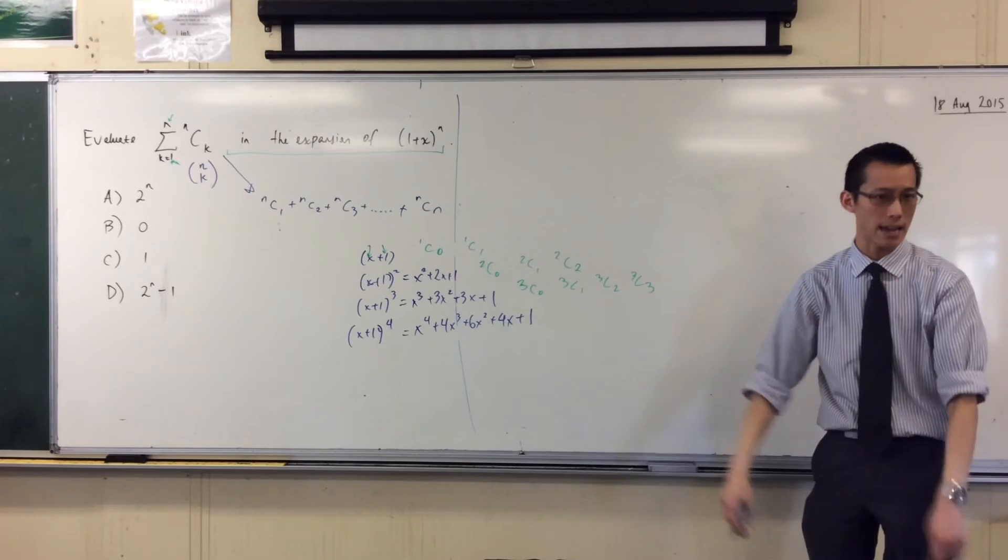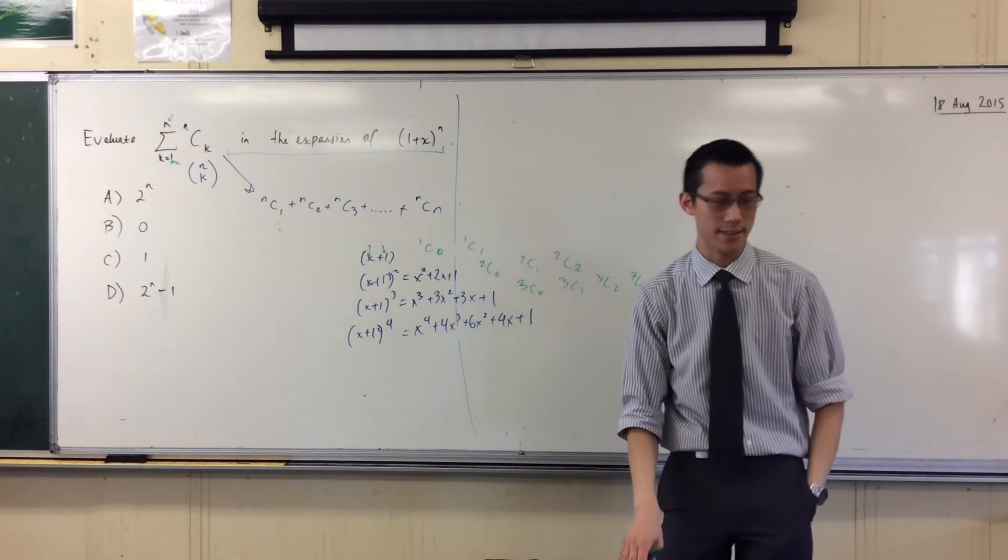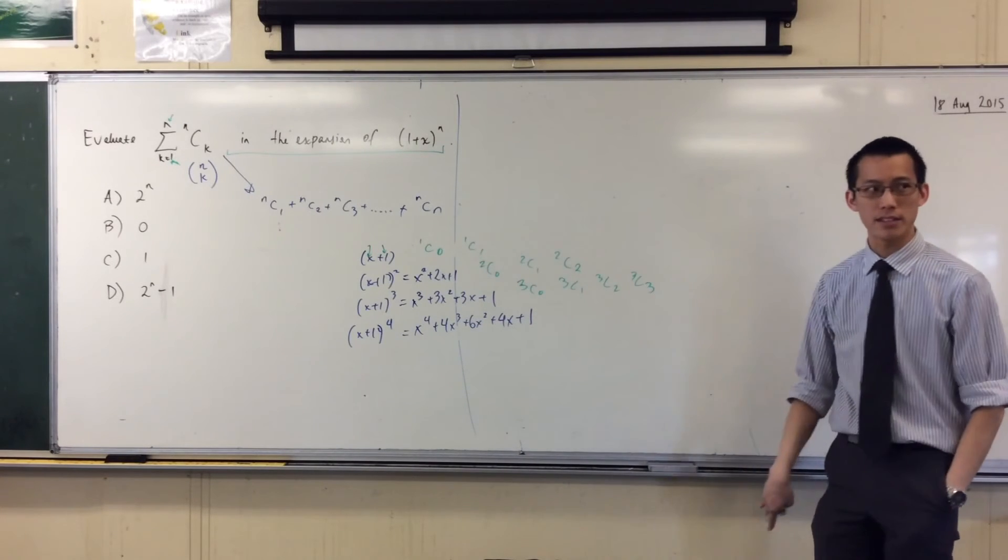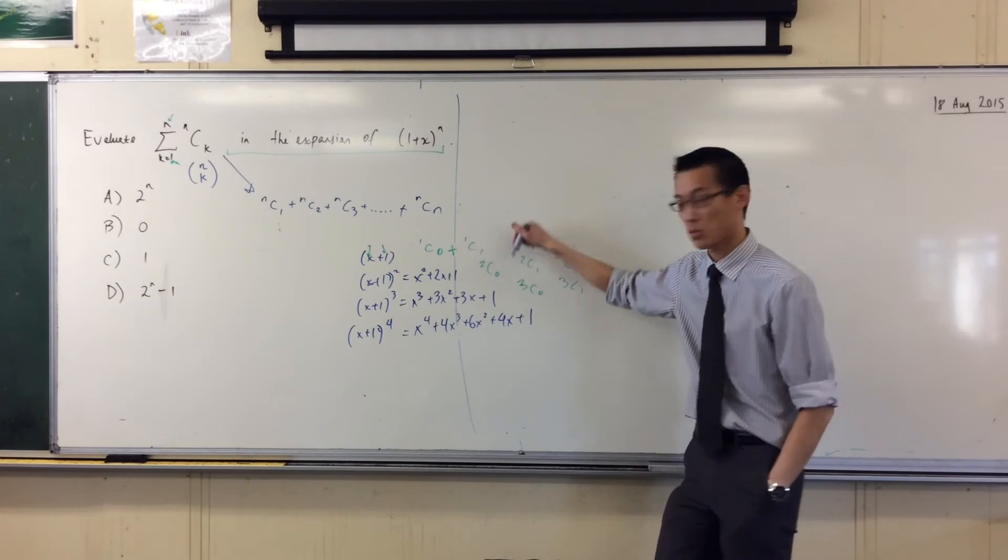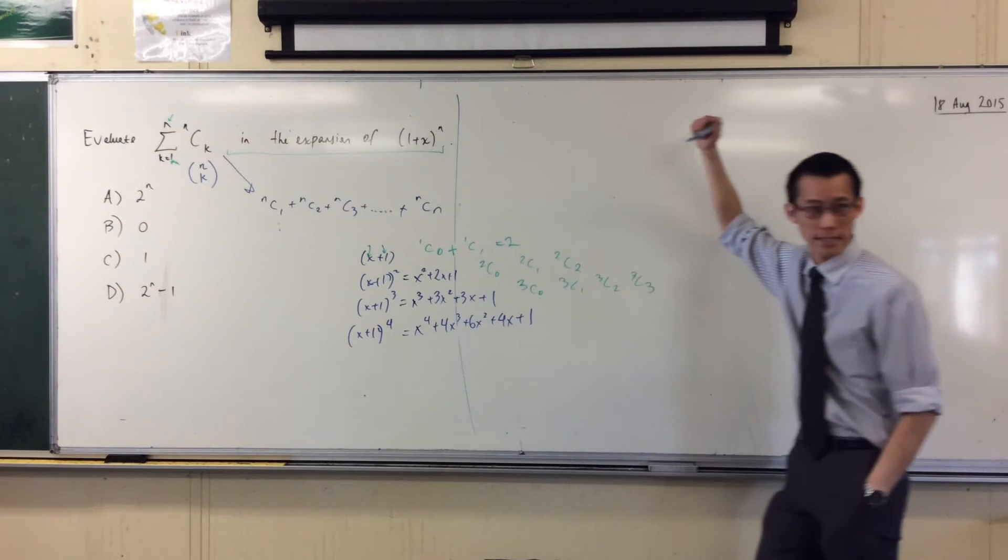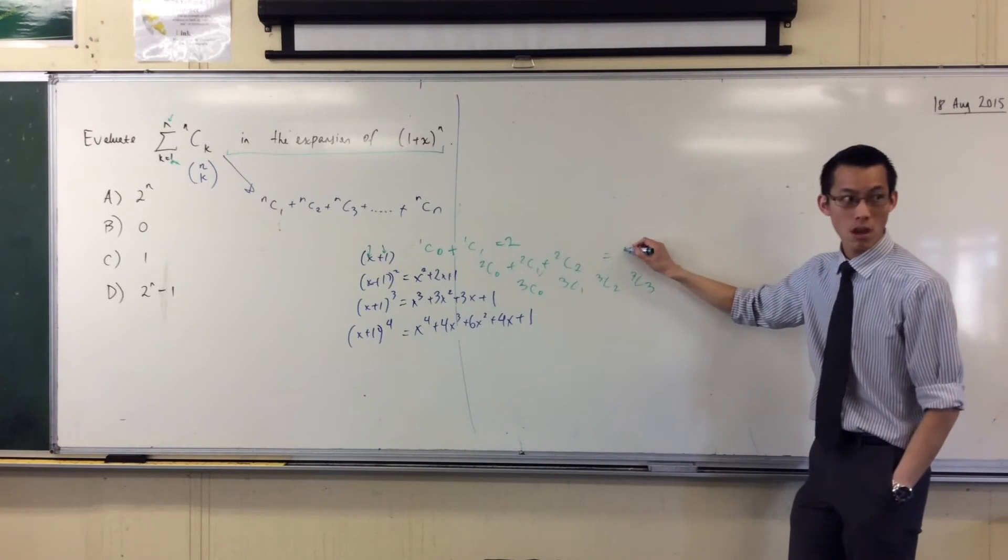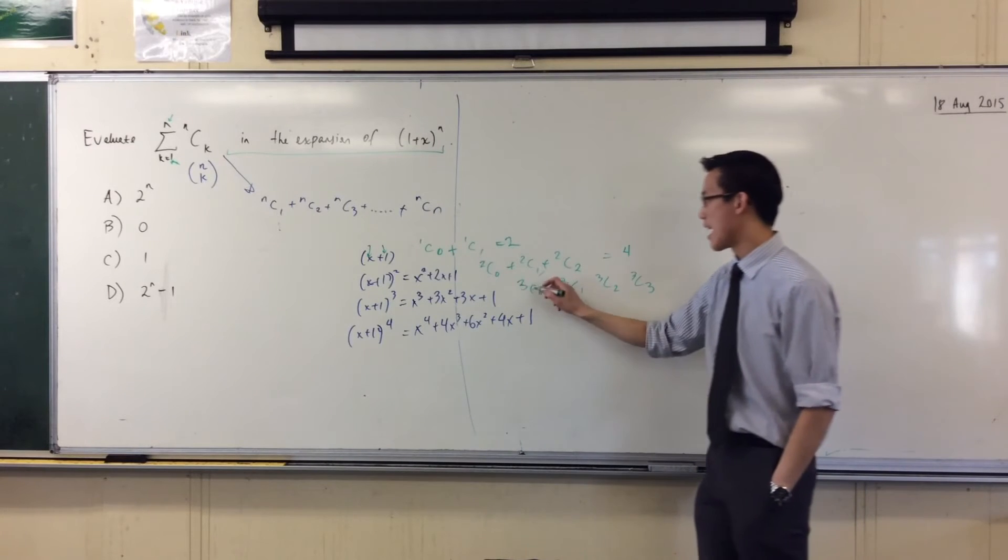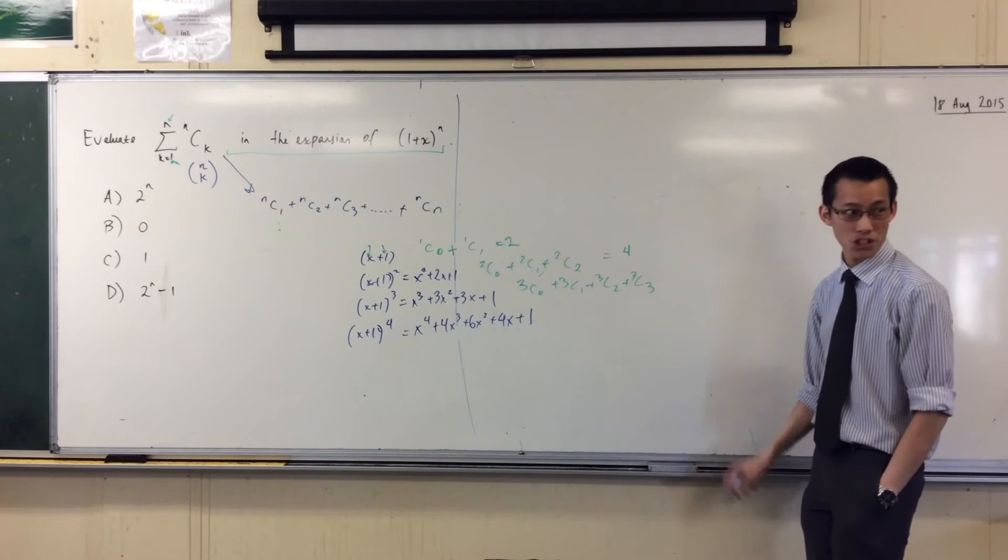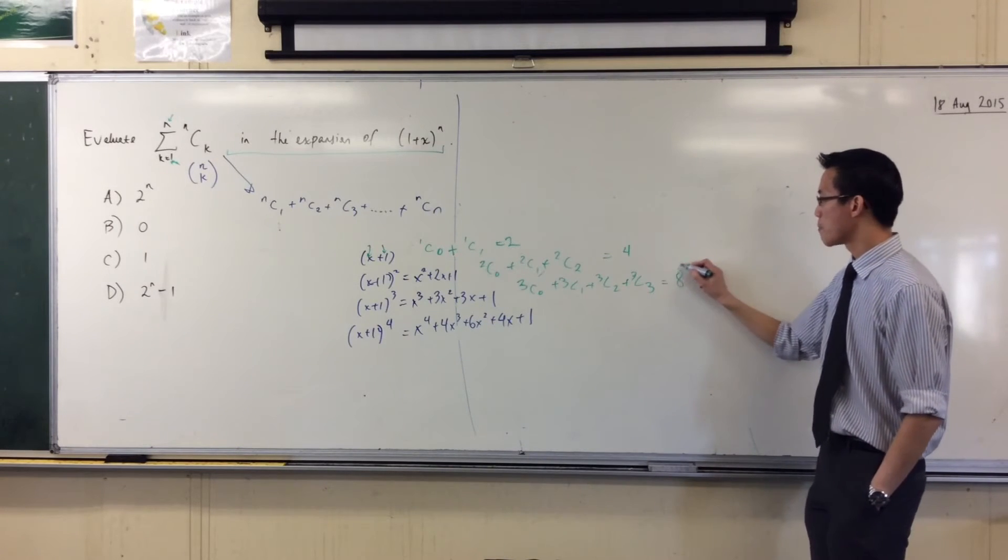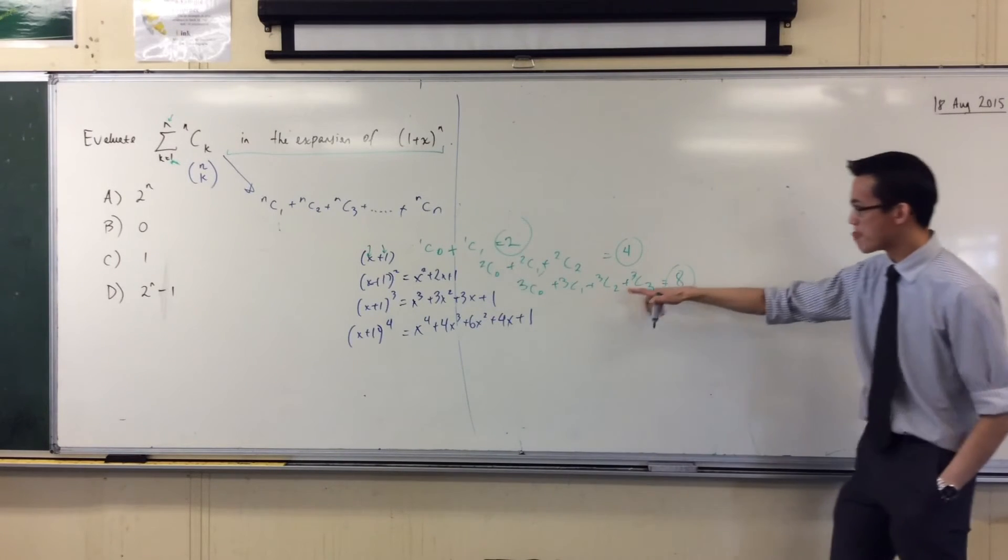You can see the pattern that's forming. You've got, sorry, this is the third row: 3c0, 3c1, 3c2, 3c3. You're getting the idea now how this relates to this. They want a sum, they want a particular sum. Let's try and follow this pattern and see what's going on. When I add up these guys that's just 1 plus 1, which is 2. When I add up these guys I'm adding 1 plus 2 plus 1, which is 4. And then when I add up these guys I'm doing 1 plus 3 plus 3 plus 1, which is 8.